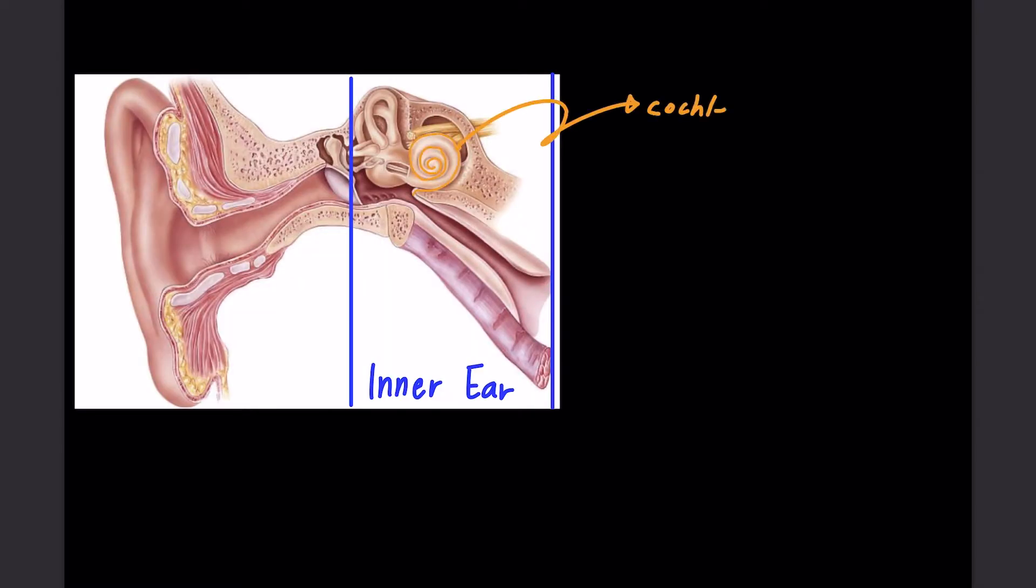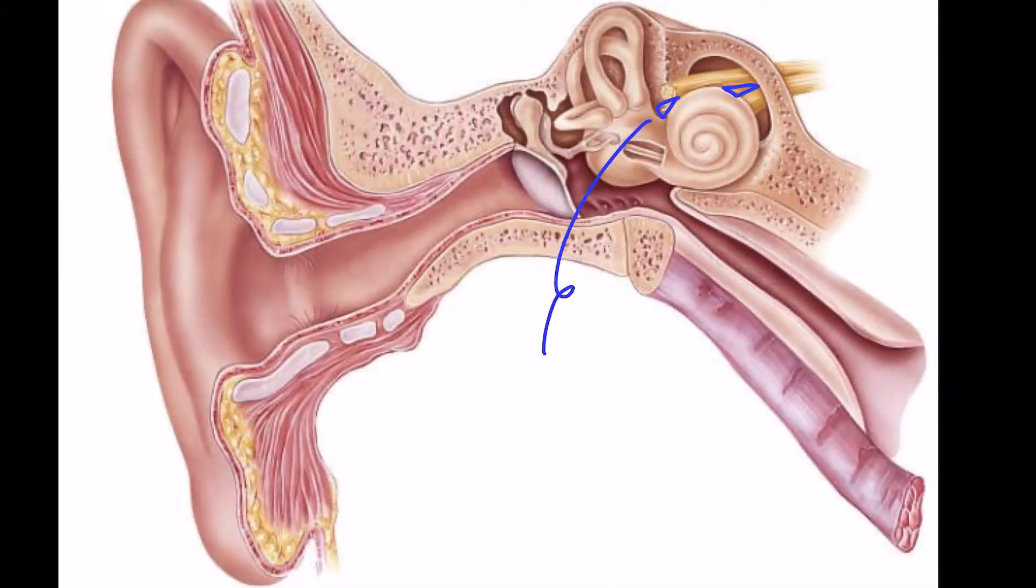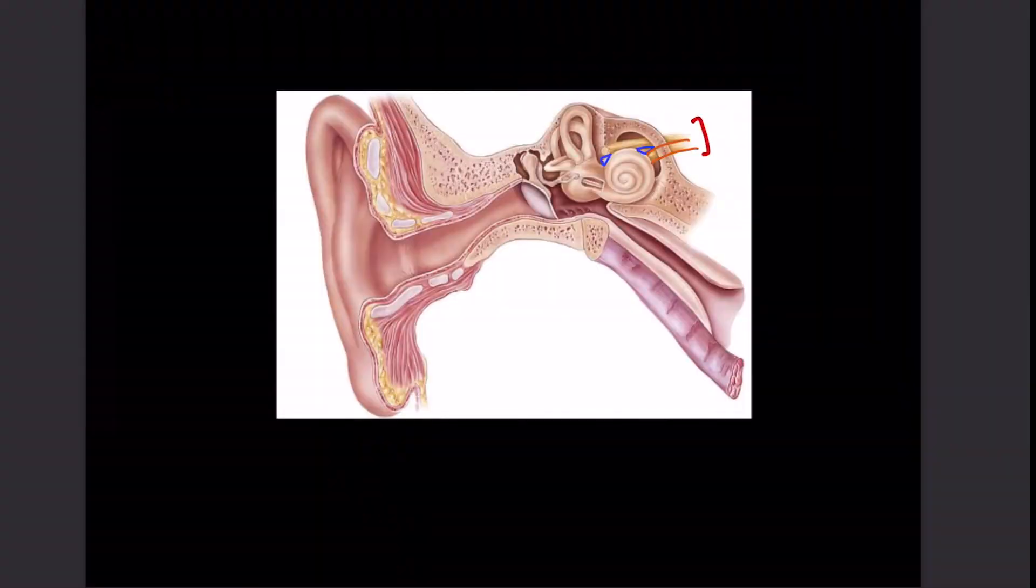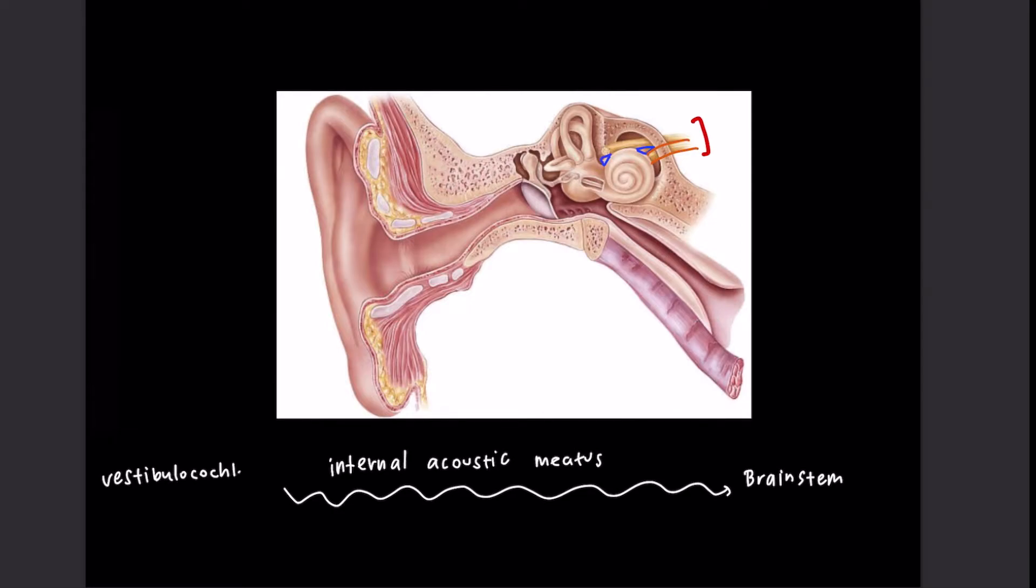The inner ear contains the cochlea, but it also contains specialized structures for our vestibular sense. The semicircular canals and vestibule are situated medial to the eardrum, or tympanic membrane, and behind the cochlea. A separate nerve transmits vestibular information, but together the two nerves travel into the brainstem through the internal acoustic meatus and are called the vestibulocochlear nerve. This is also known as the eighth cranial nerve.